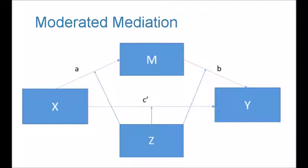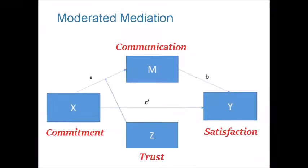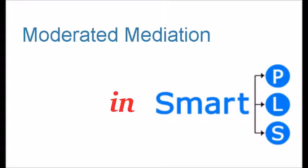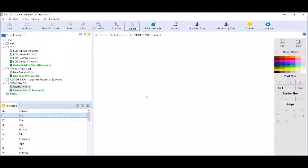In this example we will discuss a model where commitment is predicting satisfaction, and communication is acting as mediator between commitment and satisfaction. We will test whether trust — the moderating variable Z — is moderating path A or not. You can also test this on path B and path C, but for this example I will only test path A. This is called a moderated mediation model, and I'll use SmartPLS to test it.